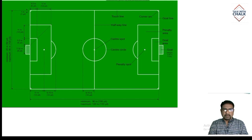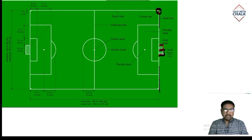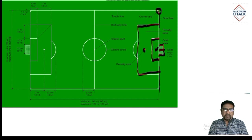The football field which we have seen has the following lines: the corner arc, corner kick, goal line, end line — this is the goal. The goal area, the penalty kick area, and the arc.